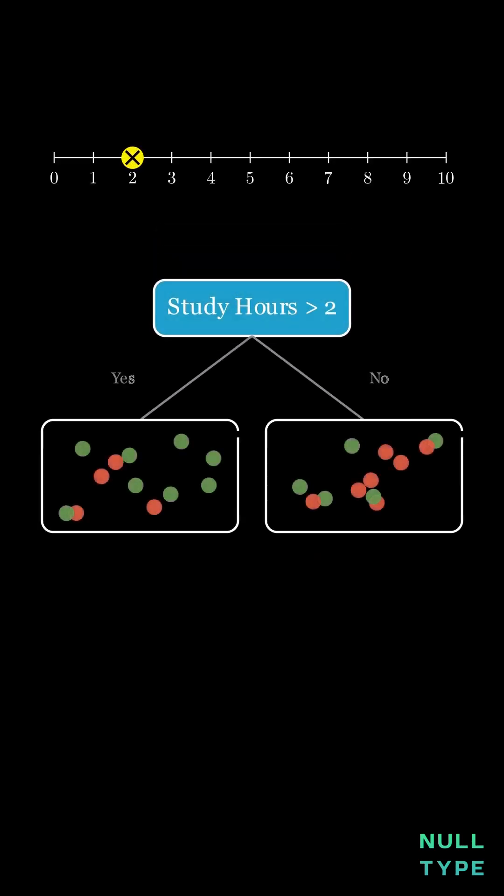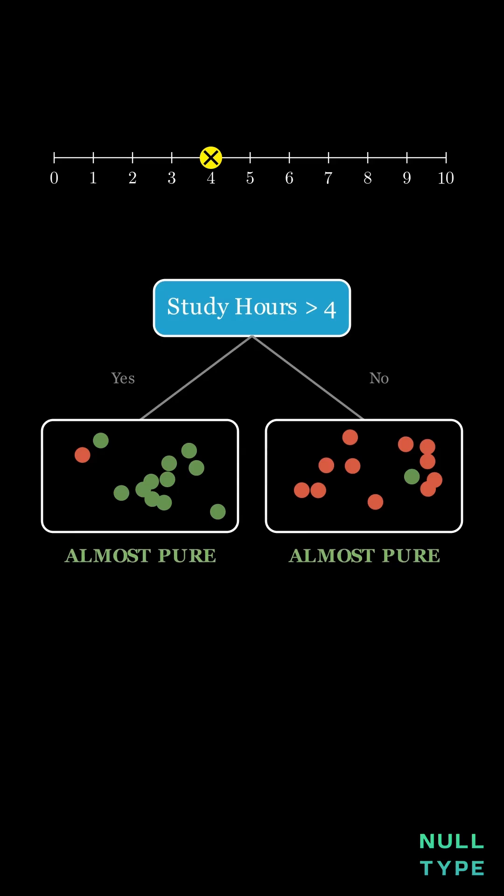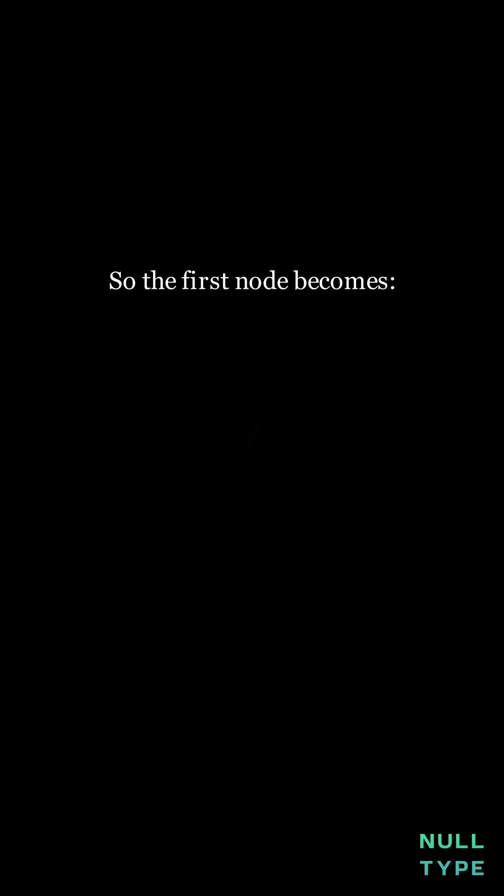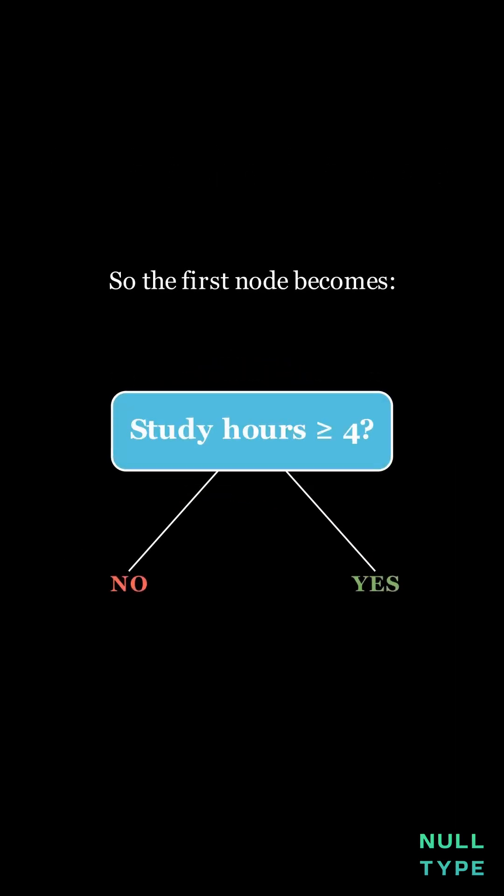Now let's try study hours. At 4 hours, the data falls into clean regions, dropping the impurity most. So the first note becomes, did the students study at least 4 hours?